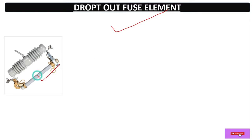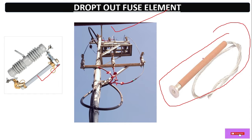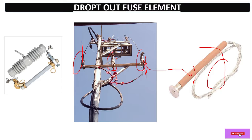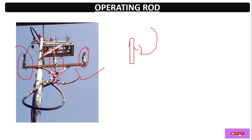There is a fuse element inside this tube. This one is actually the fuse element — it is inserted in the tube and tied off, then fixed. So here we have the DO fuse, the tube, and inside it the fuse element. With the help of an operating rod this can be operated to close and open the DO fuse.